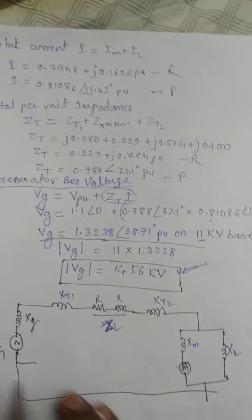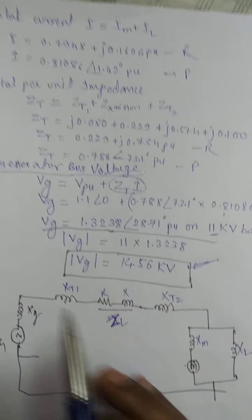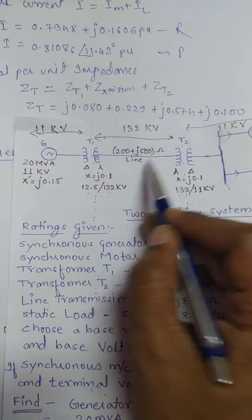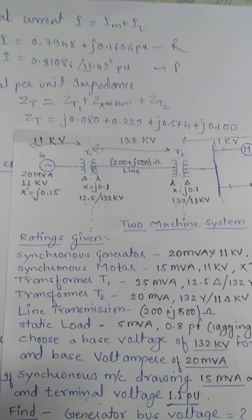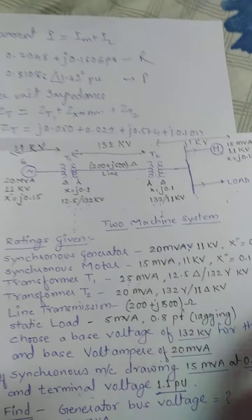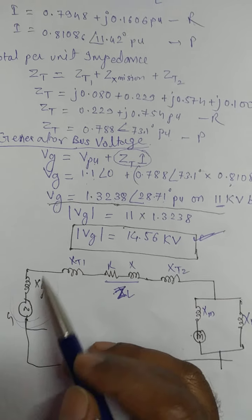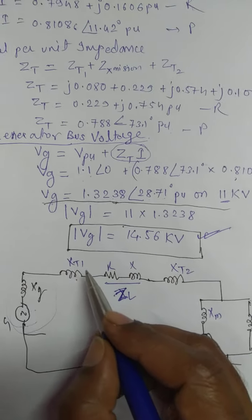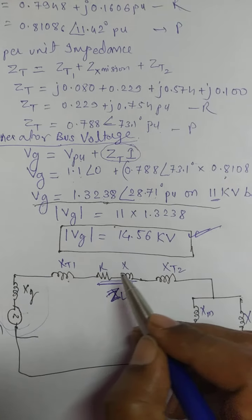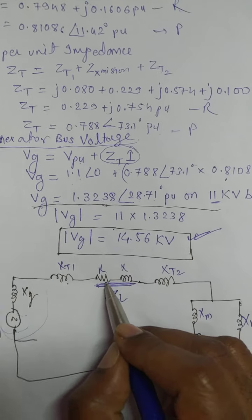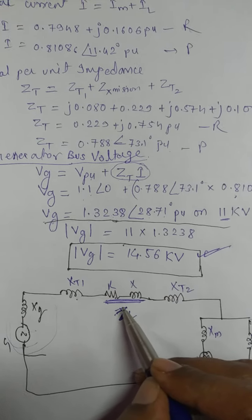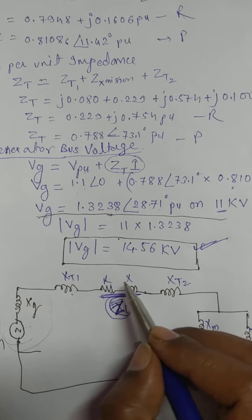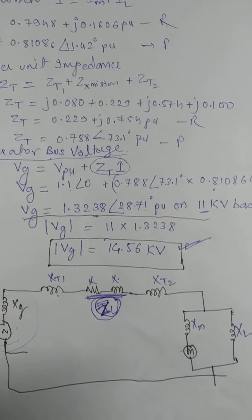Now you have to draw the reactance diagram. As discussed earlier, the elements present are: one generator, one transformer T1, the transmission line, transformer T2, motor, and load — six elements total. In the diagram, generator reactance XG is in series with transformer T1 reactance. The transmission line includes both resistance and reactance because the transmission line impedance ZL has both R and X components.